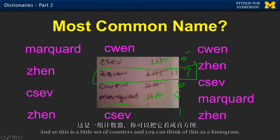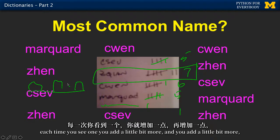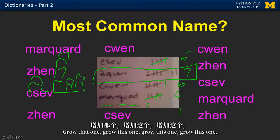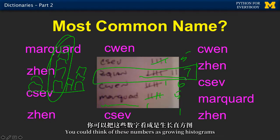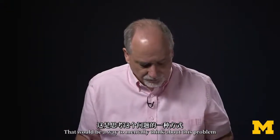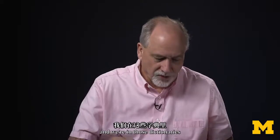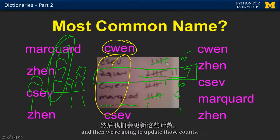That's the one that I want. And so this is a little set of counters — you can think of this as a histogram, a little histogram that's growing. Each time you see one, you add a little bit more, and you add a new one, and grow that one. When you're all done, you've got the tallest histogram. You could think of these numbers as growing histograms with names on the horizontal axis. So we're going to use dictionaries where the keys will be these strings — these names — and the values will be the current count, and then we're going to update those counts.